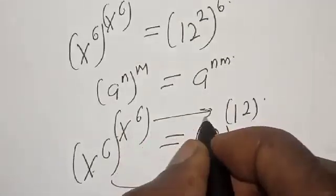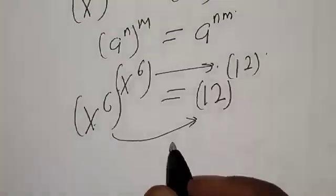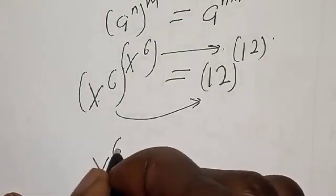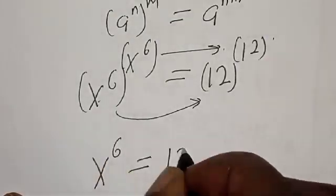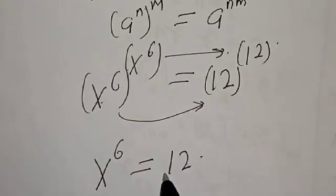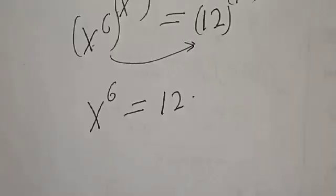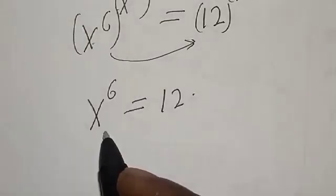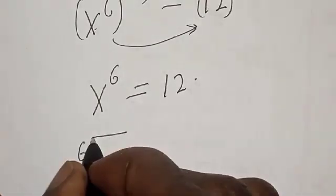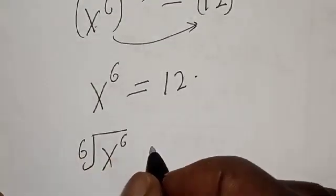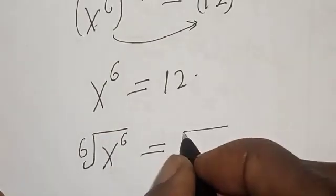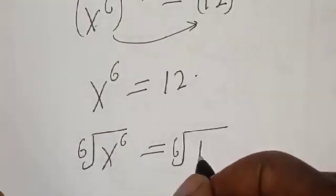By comparing the two sides, this equals this and this equals this. Therefore we have s raised to the power of 6 is equal to 12. Now we are asked to find the value of s, so let's take the sixth root of both sides: the sixth root of s raised to the power of 6 is equal to the sixth root of 12.